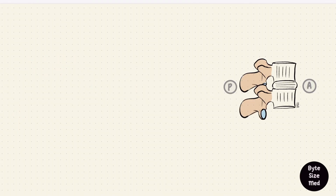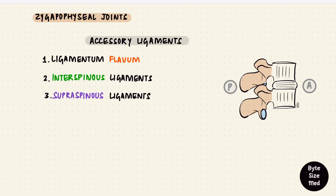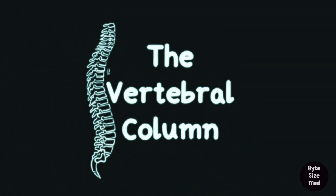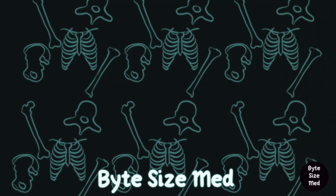So those are the zygapophyseal joints supported by accessory ligaments: the ligamentum flavum, the interspinous, the supraspinous, the nuchal ligament, and the intertransverse ligaments. And that's just some stuff about the bones, joints, and ligaments of the vertebral column. I hope this video was helpful — if it was, you can give it a like and subscribe to my channel. Thanks for watching and I'll see you in the next one.